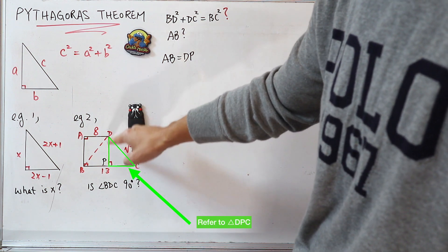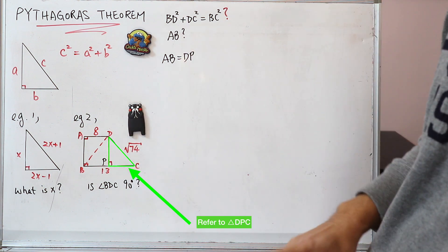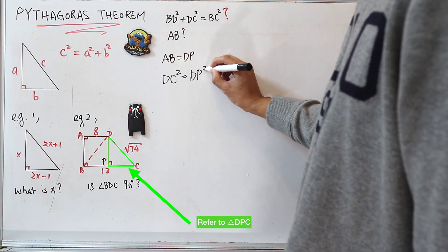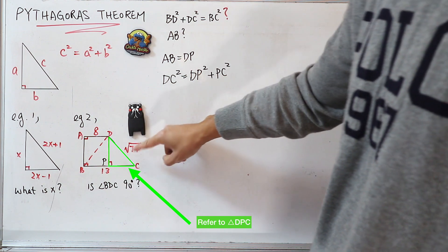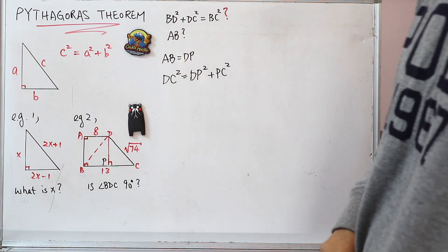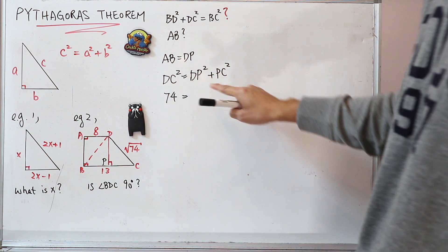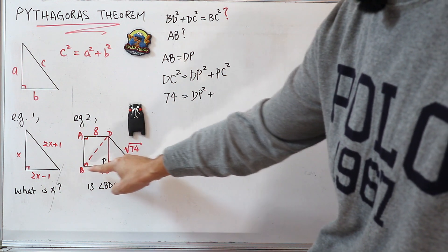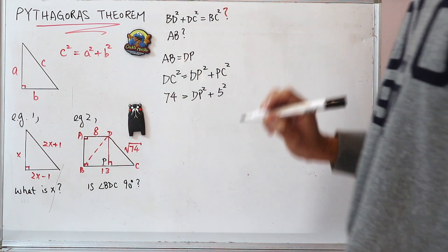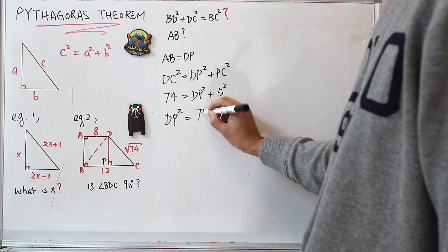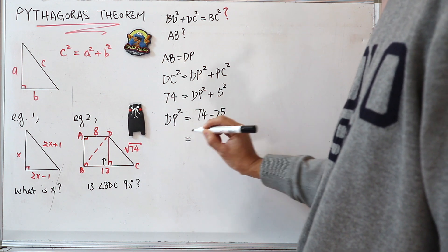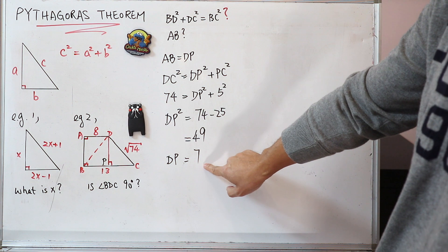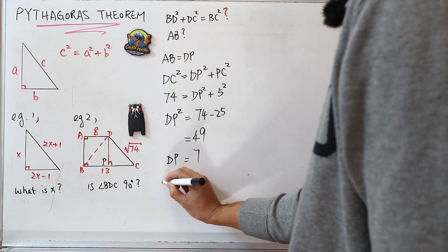DC is square root of 74, so DC squared is just 74. PC is 13 minus 8, which is 5, so PC squared is 25. Therefore DP squared equals 74 minus 25, which equals 49. So DP equals 7. After knowing that DP equals 7, I also know that AB equals 7. So by looking at triangle ABD and applying Pythagoras theorem, I can find BD. BD squared equals 7 squared plus 8 squared, which is 49 plus 64, which equals 113.